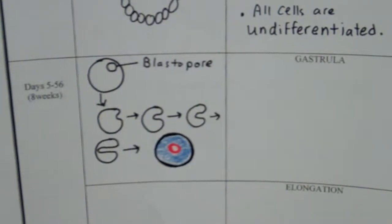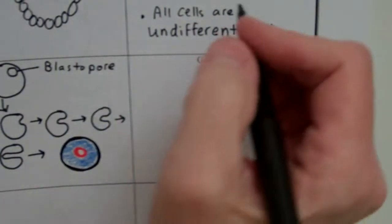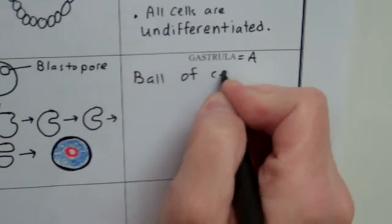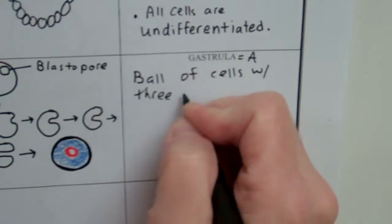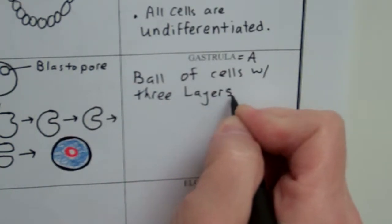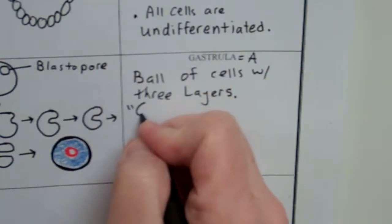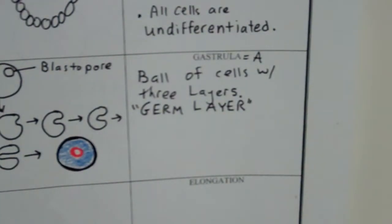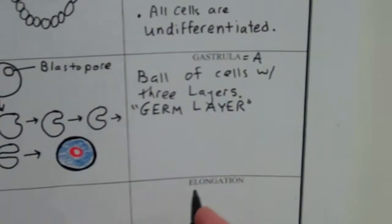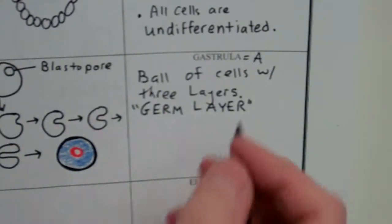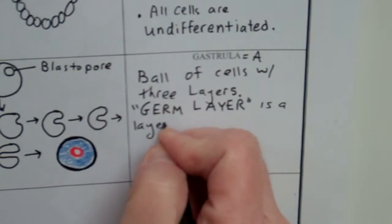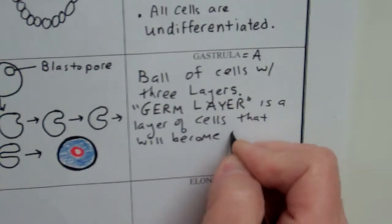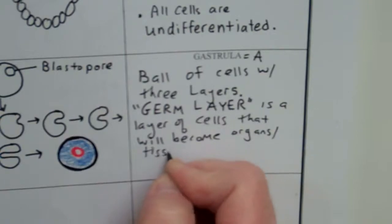And over to the side we've got our definition. What is a gastrula? A gastrula is a ball of cells with three layers. Three layers of cells. Now those layers of cells are called germ layers. It has nothing to do with germs. It has more to do with maybe with the word germinate, like to spring forth or to sprout, so to speak. So what is a germ layer? A germ layer is a layer of cells that will become organs and tissues.